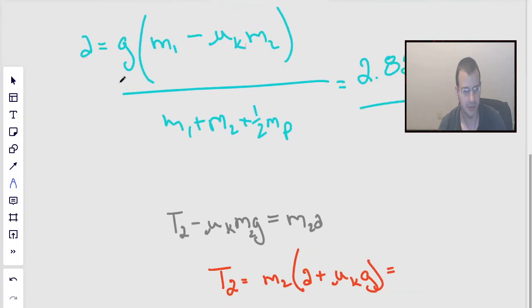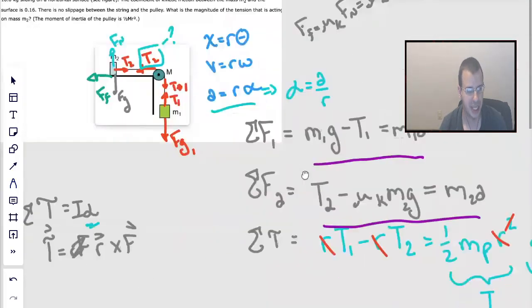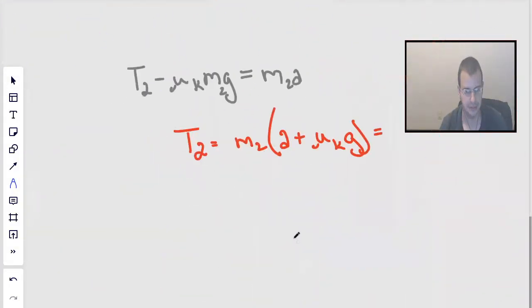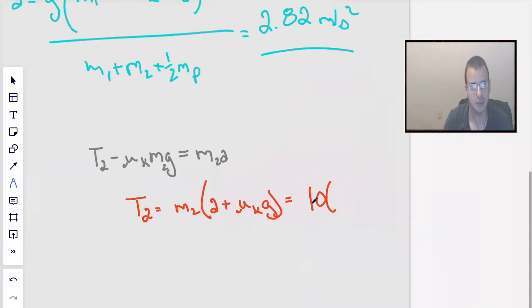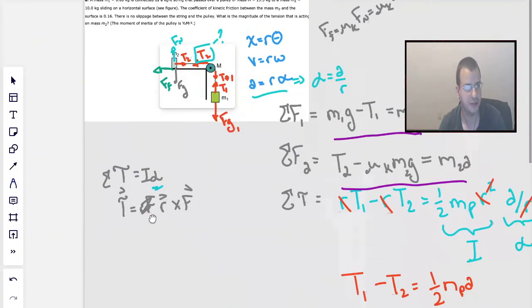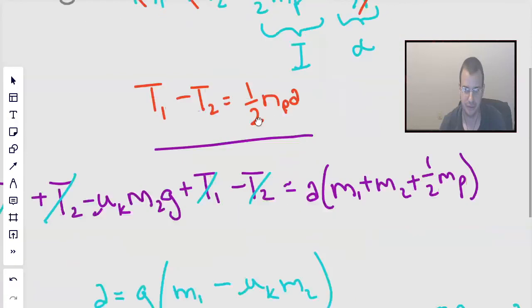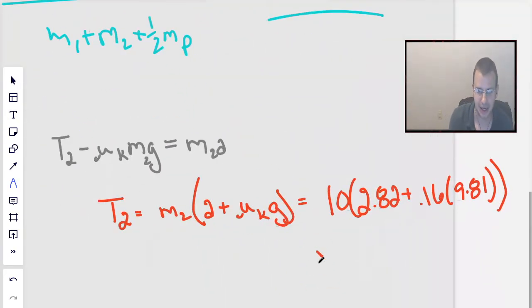Maybe that seems reasonable. So mass 2 is 10. We're going to have 10 times the quantity 2.82 plus 0.16 times 9.81. 0.16 is the kinetic coefficient of friction, meaning the coefficient of friction when something is moving. Now we need to calculator it.